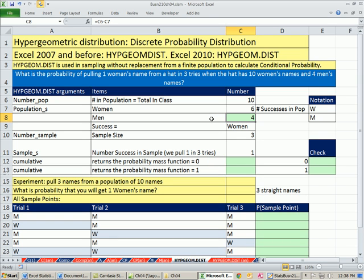If we ask the question, what's the probability of pulling three women's names all in a row? That would be three straight names. We could do a formula like this: equals 6 divided by 10, and then the sample space has changed, we already pulled one, so it's 5 divided by 9 times 4 divided by 8. So we could calculate that.